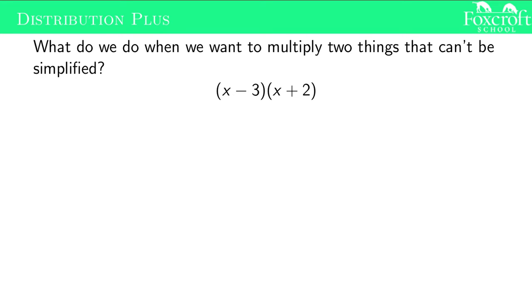Let's say we wanted to multiply these two things together, and they can't be simplified. I can't do x minus 3 because I don't know what x is, but I want to multiply these things together. Well, the distributive property says I would take this term and distribute it in to both of these. So I'm going to get x minus 3 times x plus x minus 3 times 2. That's what the distributive property says. If I have something in front of that parentheses, I multiply both things by that.